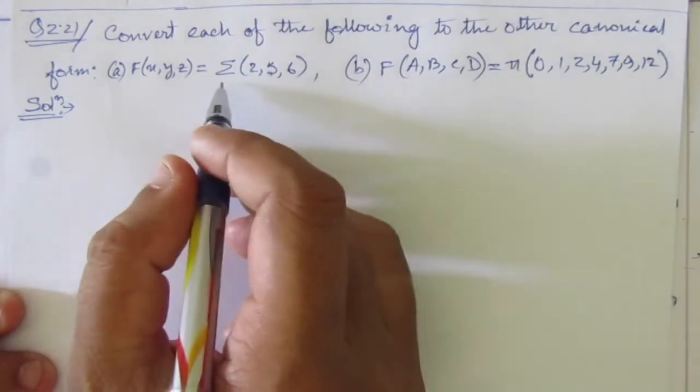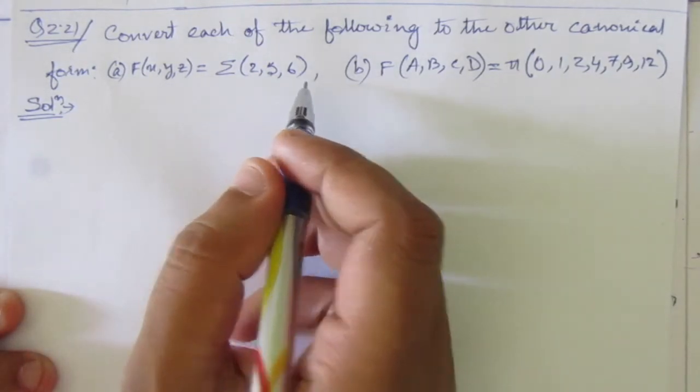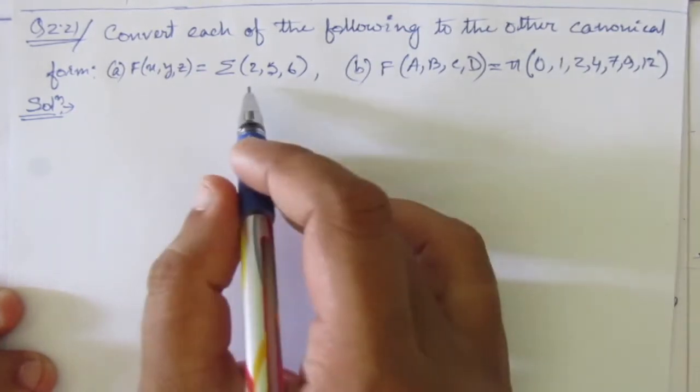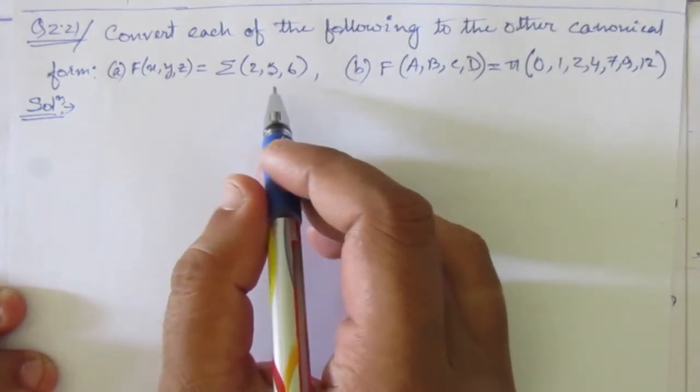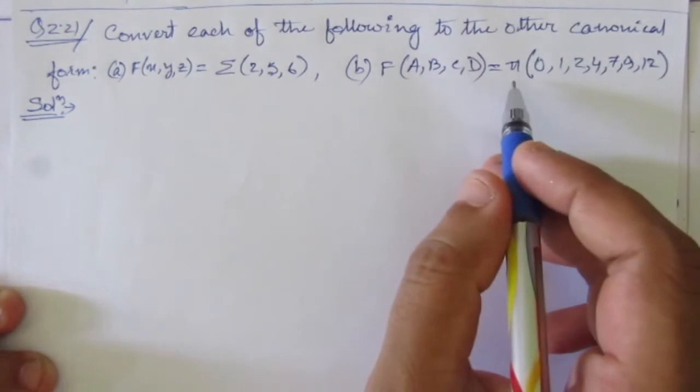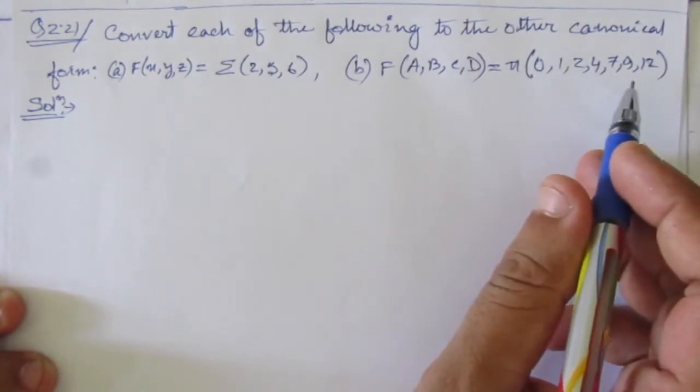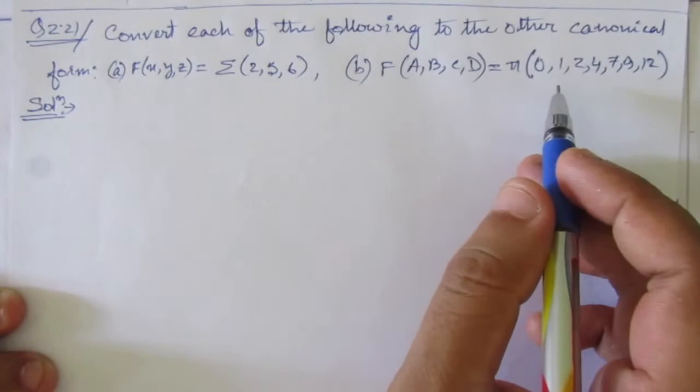That means in the first case, we are given sum of minterm form, so we have to convert it to the product of maxterm form. In the second case, we have to convert the product of maxterm form to its sum of minterm equivalent.